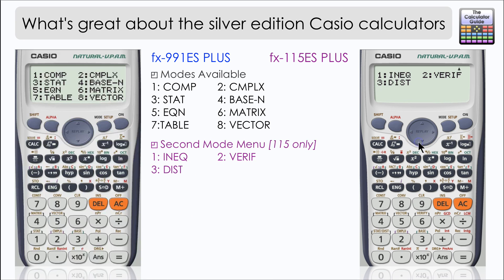The 115 has a bonus once again, it has a second mode menu which features an inequalities mode very similar to the equation solver but obviously dealing with inequalities. There's also the very useful verify mode which seems to be absent from the 991, and there's also a mode for dealing with distribution calculations as well.